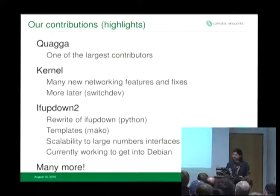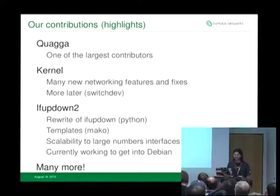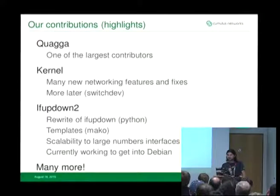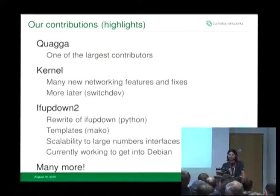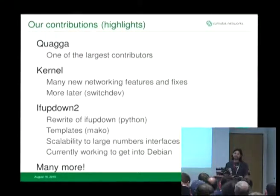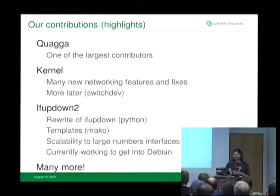For the kernel, we've been contributing heavily there. We were behind for a while, but we've gotten our patch backlog mostly upstreamed with a little still left to go. Relevant to Debian, we've actually rewritten ifupdown — the tool that manages /etc/network/interfaces. If you've ever looked at it, it's written in a weird literate programming language, C-WEB or NoWEB, which was exceedingly hard to modify. So we rewrote it in Python and added template library support using Mako.